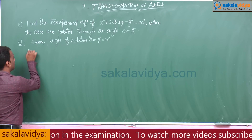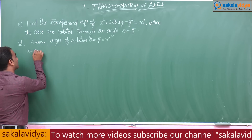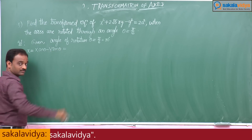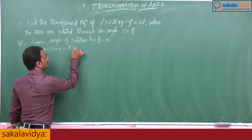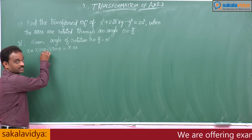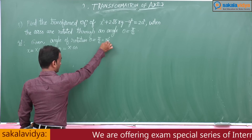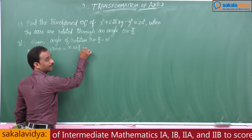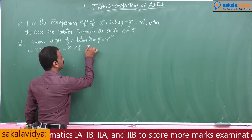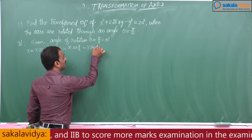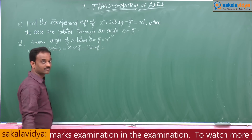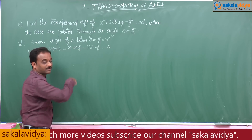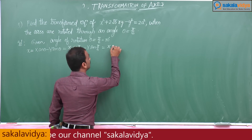The relations are: small x equals capital X cos theta minus Y sin theta. We substitute theta equals 30 degrees. So x equals X cos(pi/6) minus Y sin(pi/6), which gives x equals X into root 3 by 2 minus Y into sin(pi/6).